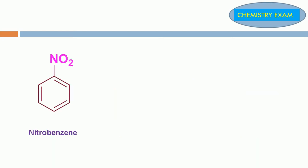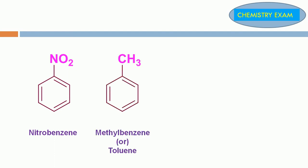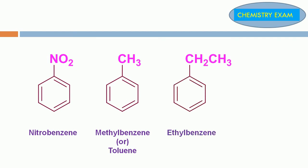NO2 group present in benzene is called nitrobenzene. CH3 present in benzene is called methylbenzene or toluene. CH2CH3 ethyl group substituted in benzene is called ethylbenzene.